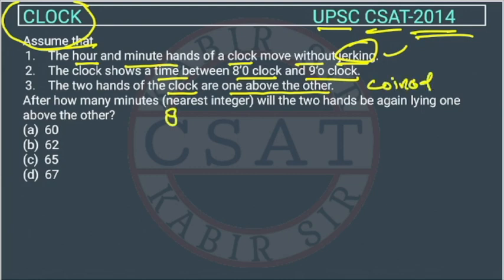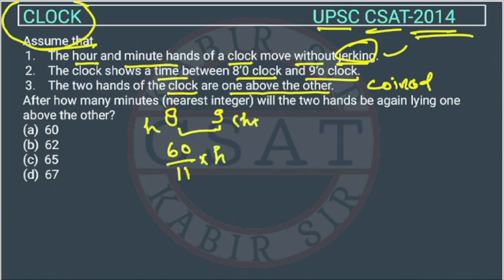The formula — they are talking about between 8 and 9. Between 8 o'clock and 9 o'clock, what will be the time when they will coincide? They will coincide at 60 upon 11 into h. If this is h and this is h plus 1, this will be 60 upon 11 into 8. So this will be the answer.